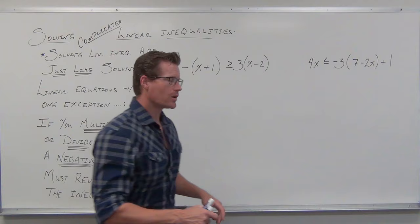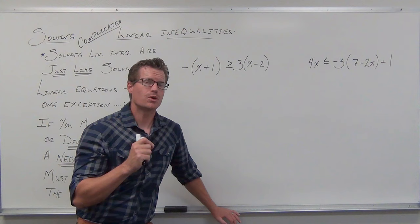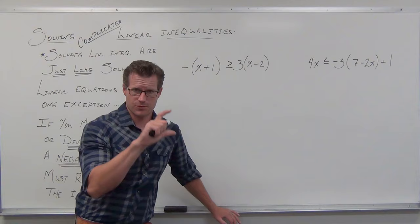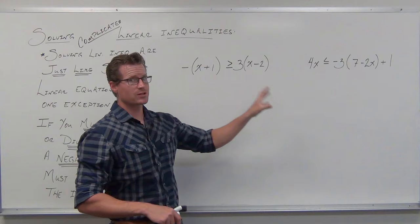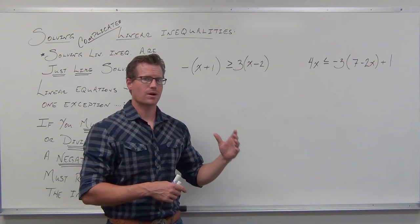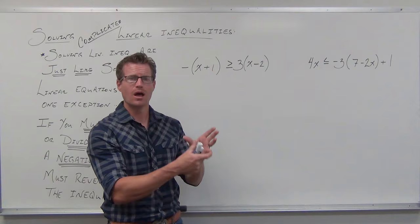I also want to clear up some things about when you reverse inequalities and when you don't. We're going to notice some distribution, and we're going to notice that that doesn't change anything about your inequality as far as the reversal goes. So let's take a look at these. We've got a couple examples with a lot of distribution going on, and we see that there are linear inequalities — you've got one variable at the first power, and you have an inequality sign rather than an equal sign.